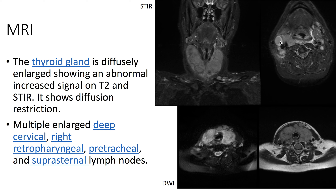This is the patient's PET-CT. We see an FDG-avid diffusely enlarged thyroid gland with an SUV max of 15.